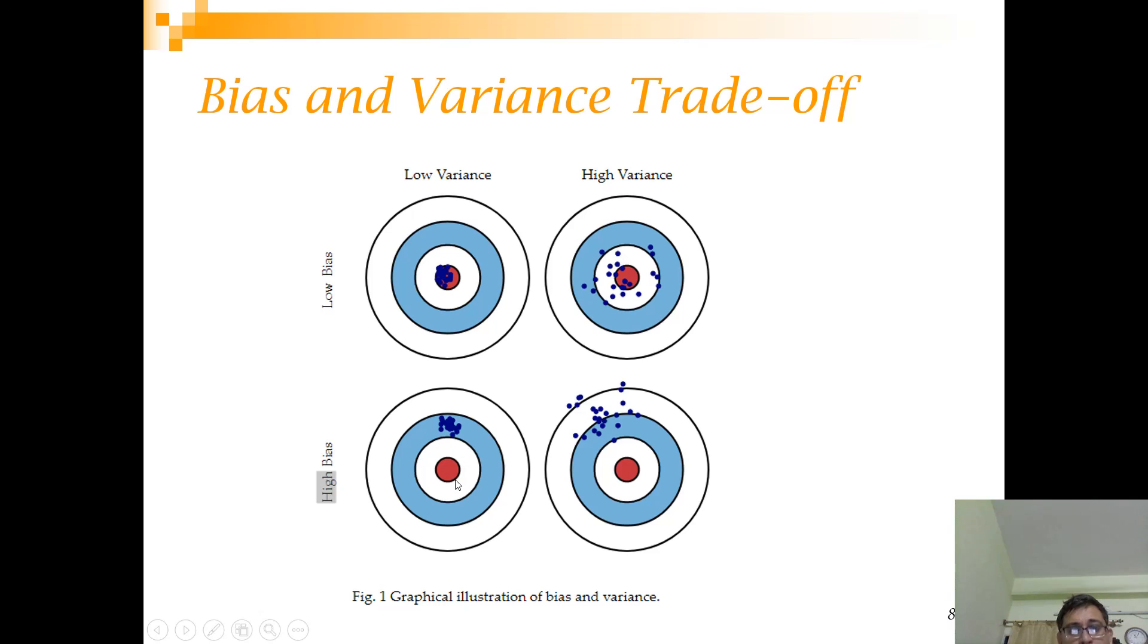This model you will see that it is quite close to the actual but it is quite spread out right. So the bias is less but the variance is high. In this particular model you will see that the actuals are far from the output and the variability is less. So this is low variance high bias. And finally you have high variance high bias.